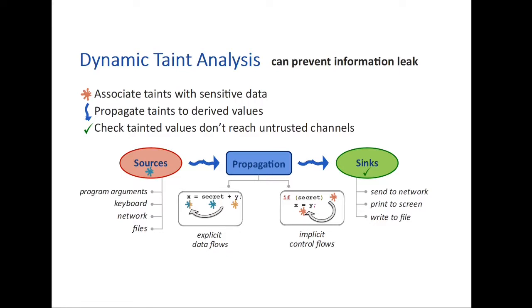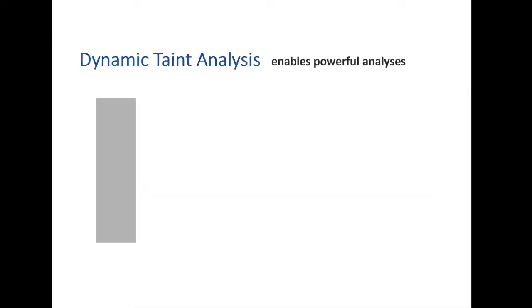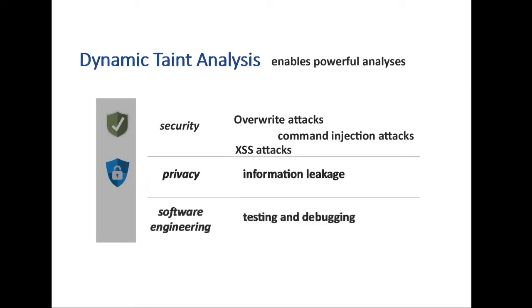By defining a proper set of sources, sinks, and propagation policies, taint tracking can be effectively used for detecting a wide range of security issues and data leaks in digital systems.